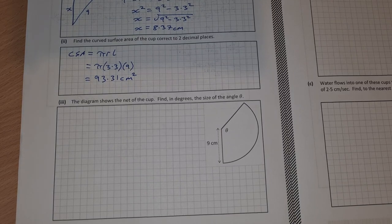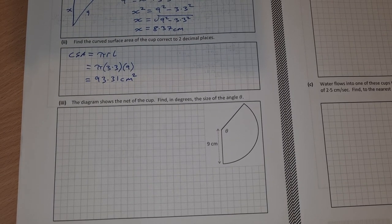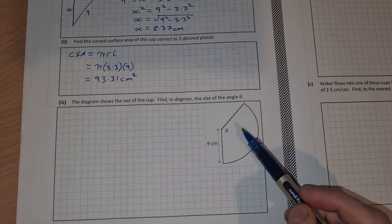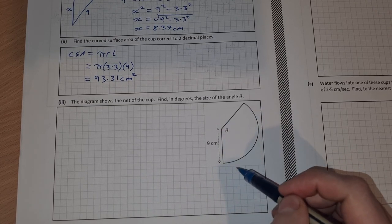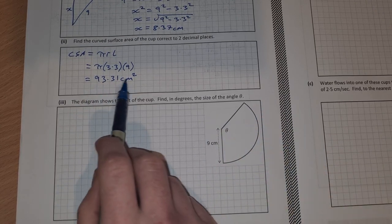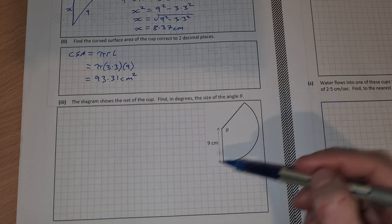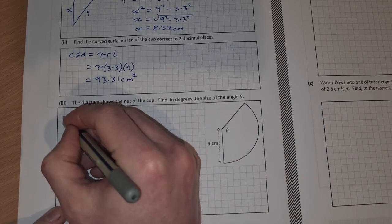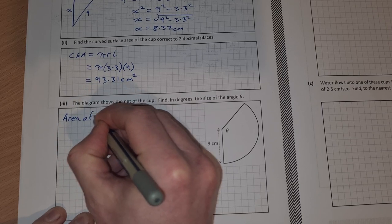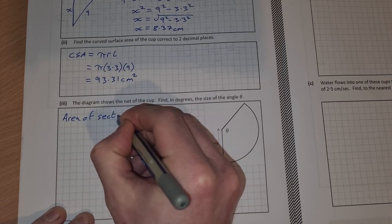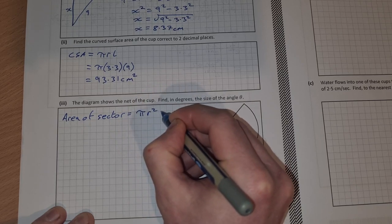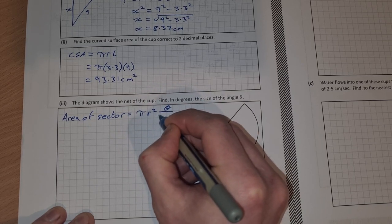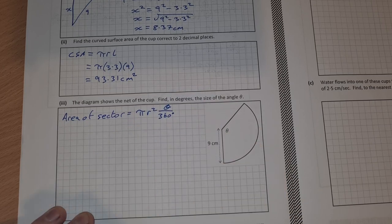Part 3. The diagram shows the net of the cup. Find in degrees the size of the angle θ. For this one, this is now a sector and we've just found the curved surface area of the cup, so we know the area of this sector. We can use the area of a sector formula which is πr²θ/360 when it's in degrees.